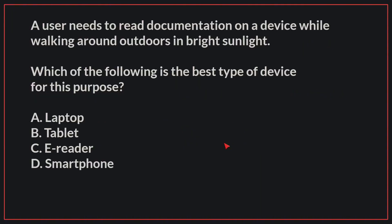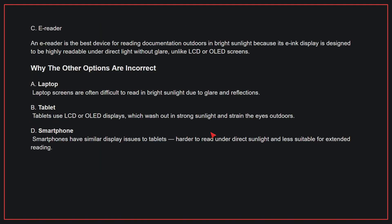A user needs to read documentation on a device while walking around outdoors in bright sunlight. Which of the following is the best type of device for this purpose? The correct answer is C, E-Reader. An E-Reader is the best device for reading documentation outdoors in bright sunlight because its e-ink display is designed to be highly readable under direct light without glare, unlike LCD or OLED screens.